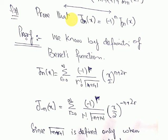The question is to prove that J(-n)(x) = (-1)^n · Jn(x). Note carefully: this is J minus n of x, not Jn of x. We will use the definition of Bessel's function: Jn(x) = summation from r=0 to infinity of [(-1)^r / (r! · Γ(n+r+1))] · (x/2)^(n+2r).